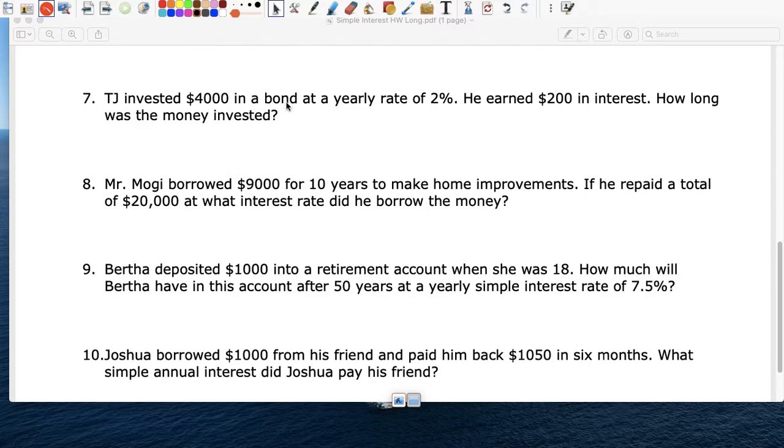Number seven. TJ invested $4,000. This is the principal. At a yearly rate of 2%. So that's the R. He earned $200. So that's the I. How long did he leave the money? So TJ put $4,000 in a bank that paid 2%. He earned a total of $200. How long did he leave the money in the bank?